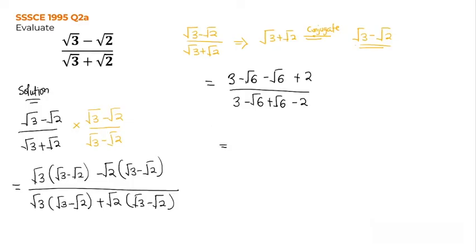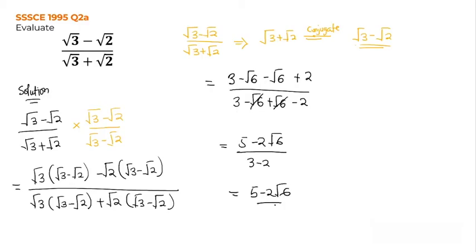So from here, 3 plus 2 gives 5, and minus root 6 minus root 6 gives minus 2 root 6. In the denominator, the negative root 6 and positive root 6 cancel, leaving 3 minus 2, which equals 1. So this is equal to 5 minus 2 root 6 over 1, which equals 5 minus 2 root 6 as our answer.